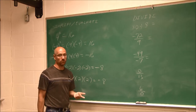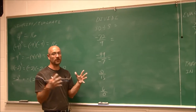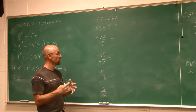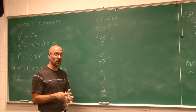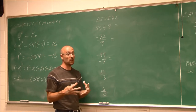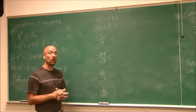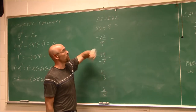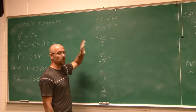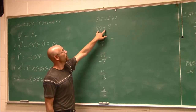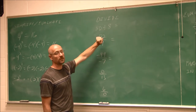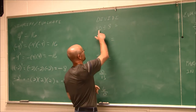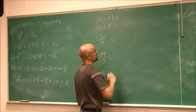Now we're going to look at division. We've already talked about all the rules of division — that same rule of counting negatives applies to division as well. Multiplication and division are similar operations, so they follow the same rules. 80 divided by 8: two positive values gives a positive outcome — 80 divided by 8 is 10.